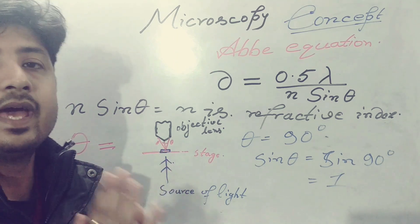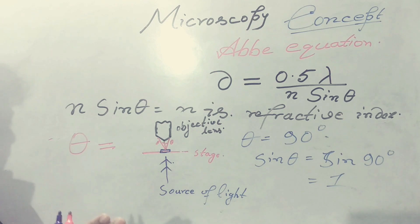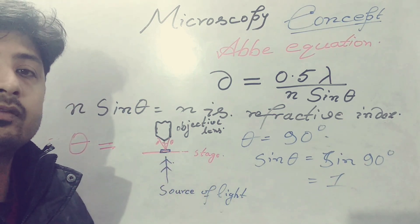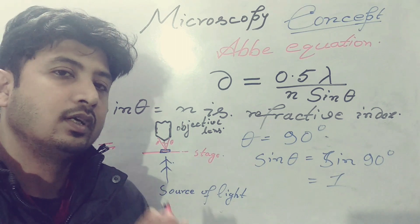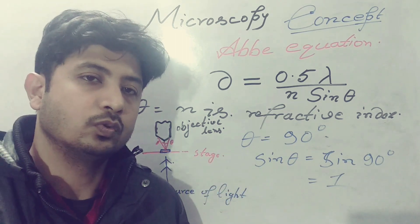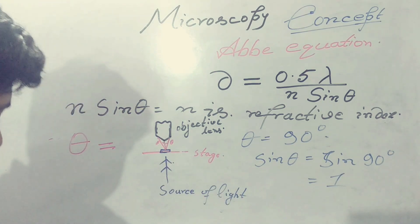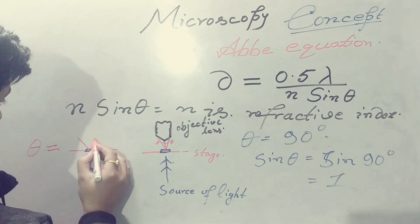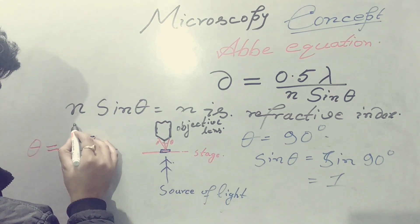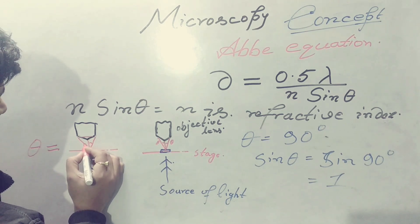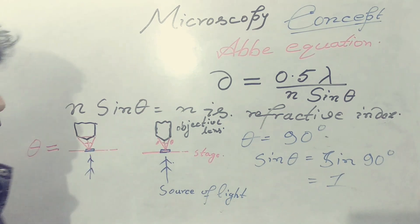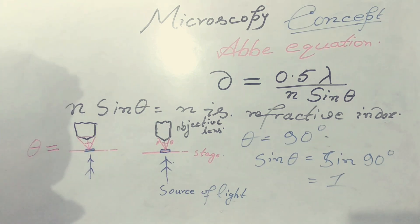The opposite is true if the light covers a broad area after passing through the specimen — the light reaching the objective lens will be in a broad area. The angles will be much wider, and the two points will be separated much more efficiently if the refracted lights are in a wider area. That is the crucial thing when considering the sine theta of the lens.